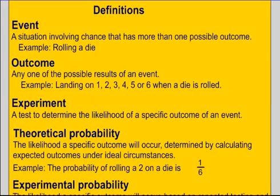So before we begin, we're going to need to look at some definitions. To start, we have to have an event, which is a situation involving chance that has more than one possible outcome. For example, rolling a die. Another example would be flipping a coin or drawing a card out of a deck.